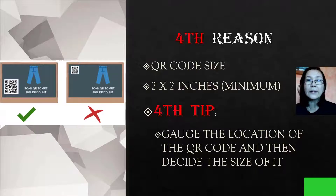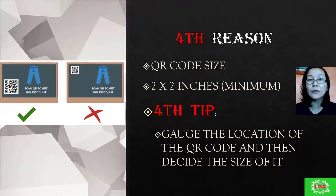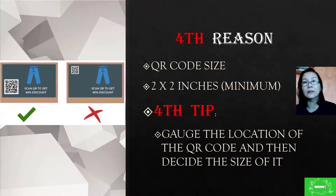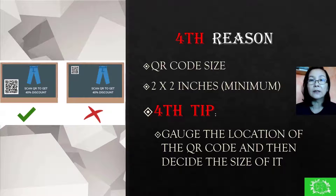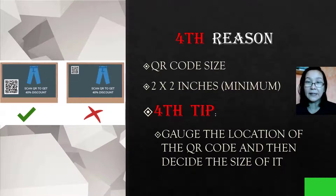The fourth reason is because of the QR code size. The minimum size is 2 x 2 inches. The fourth tip is to consider the location of the QR code first, and then decide the size of the QR code — that is very important.